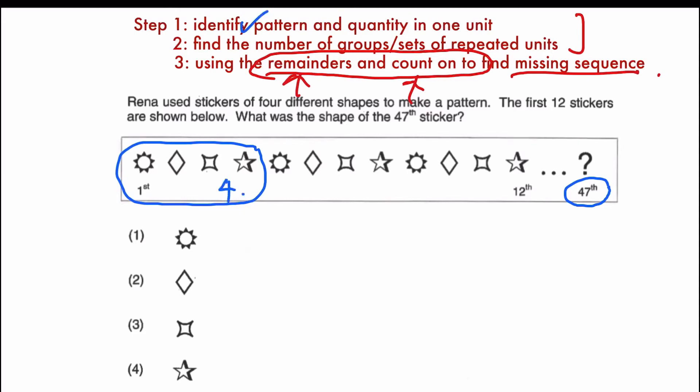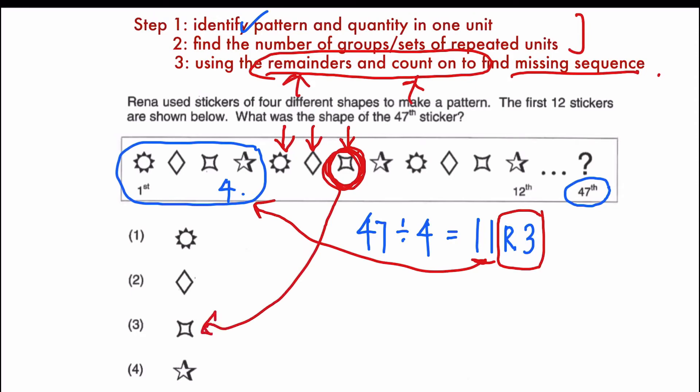Step number 2, find the number of groups. So I will use the total, which is 47, divided by 4. And my answer will be 11 with remainder of 3. So step number 3, the most important step, is to use the remainders and count on the missing sequence. So my remainder is 3. And there are 11 sets of this. So my 3 remainders will be 1, 2, 3. And my answer is this particular shape, which is option number 3. Pretty easy.